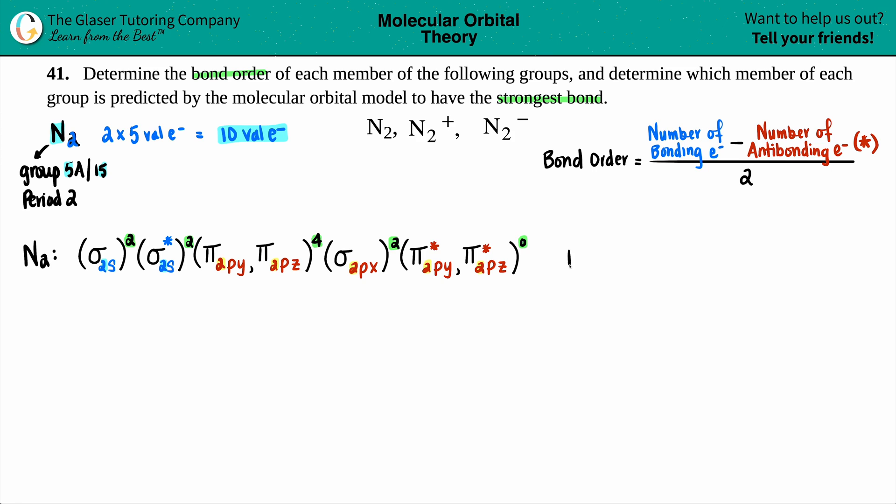Let's find the bond order for N2. Bond order is something minus something divided by two. Find the antibonding first: I have two here and zero in this case, so two antibonding. The rest are bonding: two electrons here, four electrons, so that's six, then two more, so eight. Eight minus two divided by two. Six divided by two is three. So we have a bond order of three for N2.